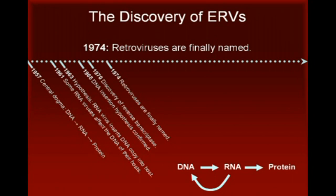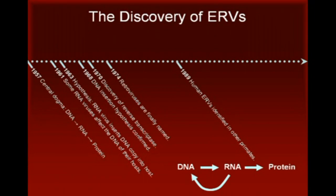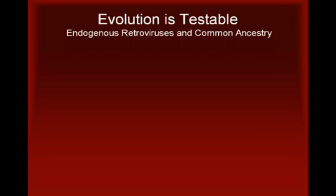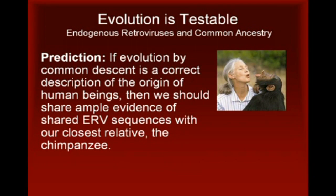In the decades since the discovery of the retrovirus, numerous molecular studies have shown that the genomes of all vertebrate species contain evidence of ERVs. For instance, in a 1989 study, researchers found that a group of endogenous retroviruses known as human endogenous retrovirus type 2 are characteristic of humans, apes, and old-world monkeys. The detection and identification of these sequences provides an opportunity to test predictions generated by evolutionary theory — specifically, predictions related to common ancestry. One such prediction is quite simple: if evolution by common descent is a correct description of the origin of human beings, then we should share ample evidence of ERV sequences with our closest relative, the chimpanzee.